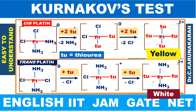Cisplatin reacts with aqueous thiourea to give a completely substituted product — a yellow color solution which on cooling gives yellow precipitate, yellow needles. Whereas transplatin reacts with thiourea solution to give a partially substituted product — a white color solution from which white needles are obtained on cooling.